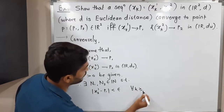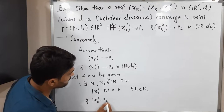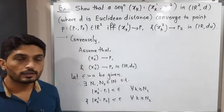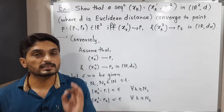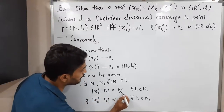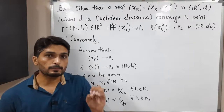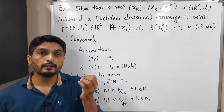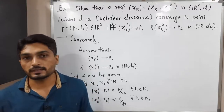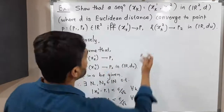There exist N1 and N2 in the natural numbers such that |xk1 - p1| < epsilon for all k ≥ N1, and |xk2 - p2| < epsilon for all k ≥ N2. Now I will make a small adjustment: instead of epsilon, I will use epsilon divided by root 2 in both inequalities. Since we don't know the value of epsilon, dividing by root 2 still gives a positive real number, so this adjustment is valid.